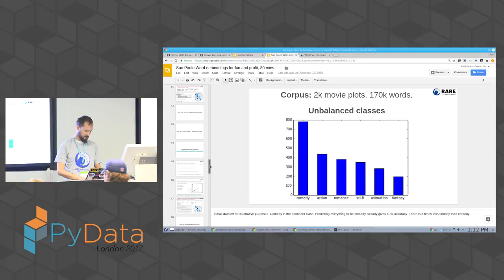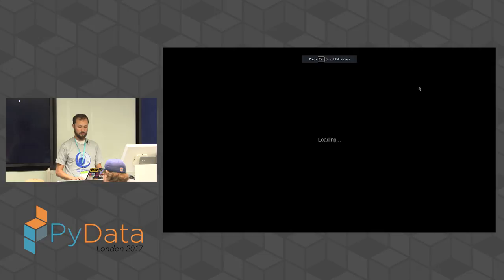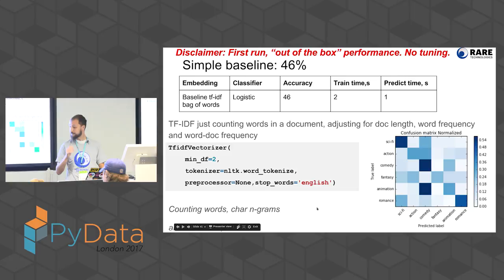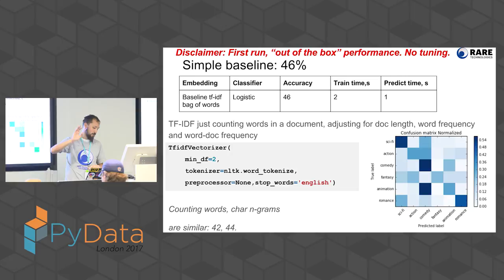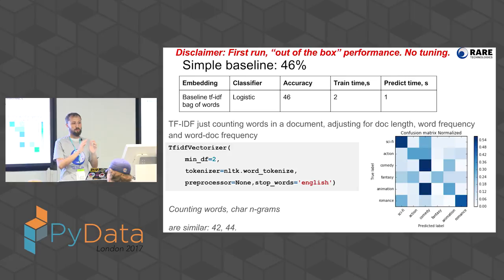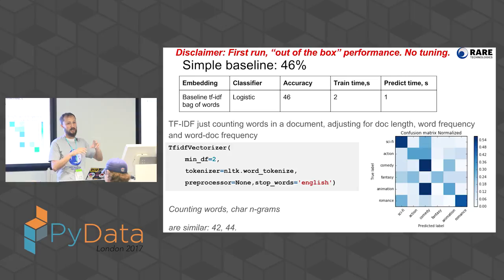That gives me accuracy of about 42%. But if I do TF-IDF I get 46%. Does anyone know what TF-IDF is? If one movie plot has the word 'love' appear five times, but the plot is 10,000 words long, it probably doesn't mean it's about love. But if the movie plot is only 100 words long and the word 'love' is five of them, that's actually really important. TF-IDF adjusts by document length and also by how rare or frequent the term is — a more clever way to count words, giving better accuracy.